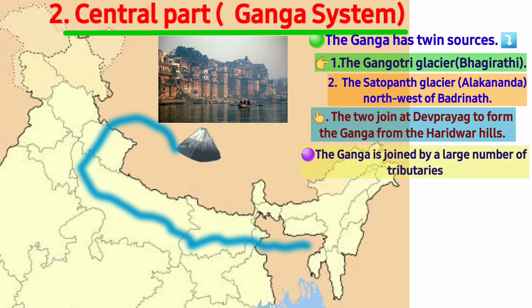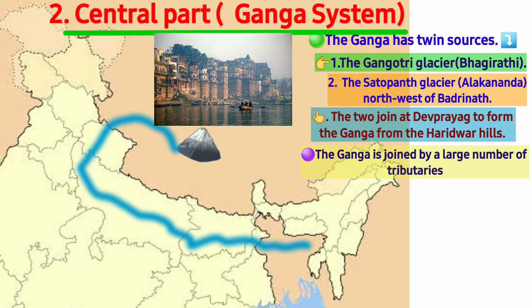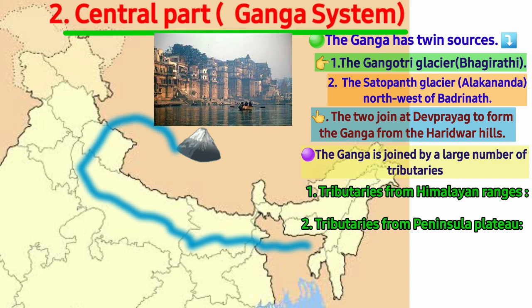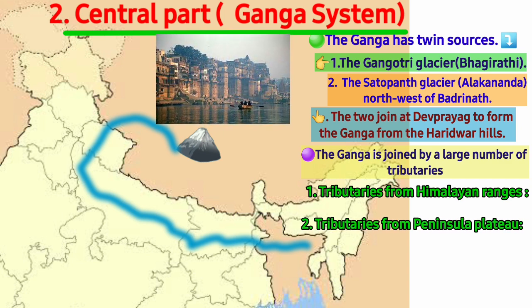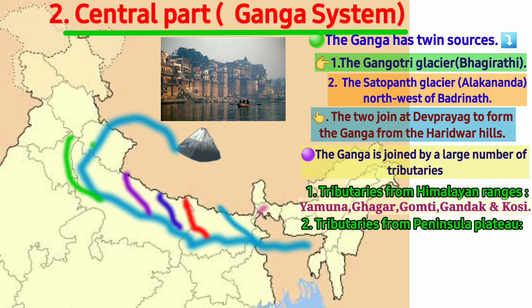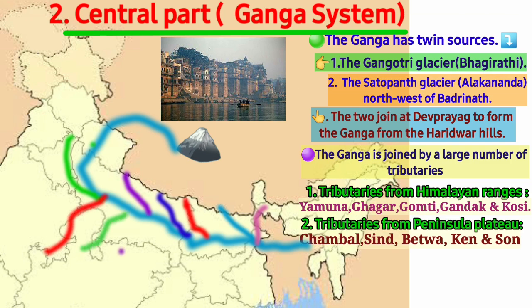Ganga is joined by a large number of tributaries. Tributaries from the Himalayan range include Yamuna, Gomti, Gandak, Koshi, Ghaggar, and Tista. Tributaries from the Peninsular Plateau — which take birth in the Peninsula and flow northward to join the Ganga — include Chambal, Sindh, Betwa, Ken, Son, and Damodar.